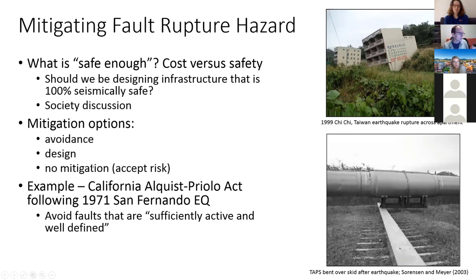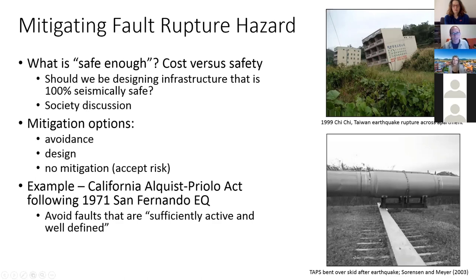Another option is to mitigate by design. For certain facilities — pipelines, rail systems, bridges — there often is no choice but to cross an active fault. So we need to come up with ways to mitigate fault displacement hazard by designing for it. Here's another photograph from the Trans-Alaska Pipeline taken immediately after the earthquake, showing one of the vents elevating the pipeline that performed just well enough that there was no damage to the pipe. It was a relatively simple exercise to realign the skid to place it beneath the vent.